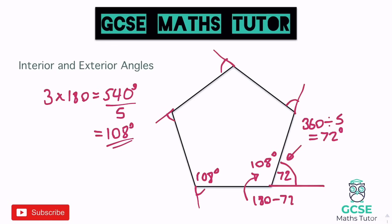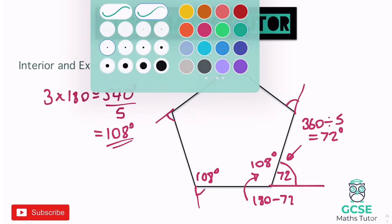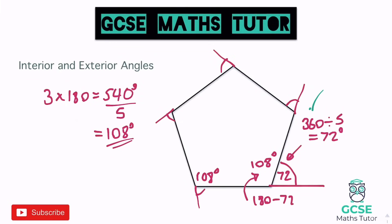So there are two things you need to know: how to work out the interior angle, and that the exterior angles add up to 360. The sum of exterior angles equals 360, which lets you find the exterior angle easily. Also remember that the interior angle and the exterior angle add up to 180. To find the interior angle: take away two from the number of sides, times it by 180, and divide by however many angles are in the shape.